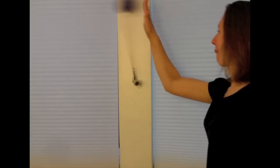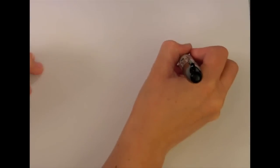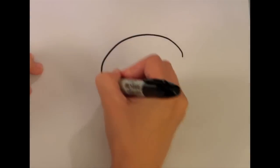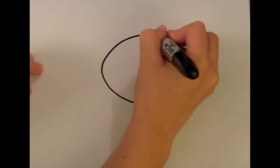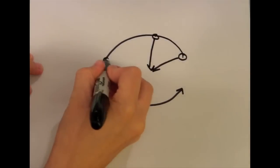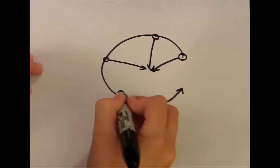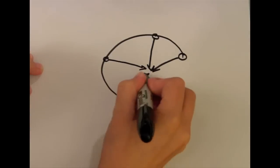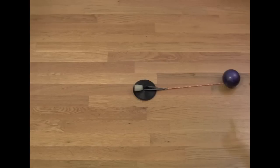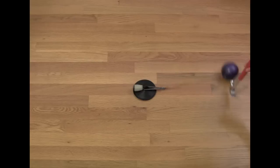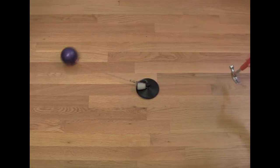Circular motion — how does it work? Why did that ball start to move in a circle? Turns out all you need to get something moving in a circle is a force on that object towards the center of the circle. In this case, the string pulls the ball into the center, forcing it in a circle.